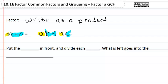So in other words, we put the GCF in front and divide each term by the GCF. What's left goes into the parentheses.